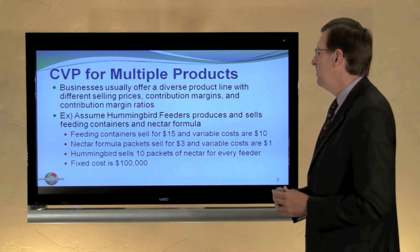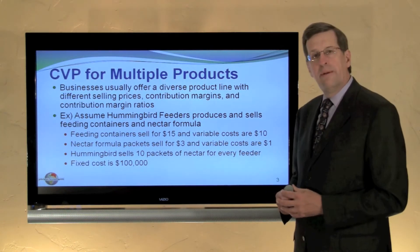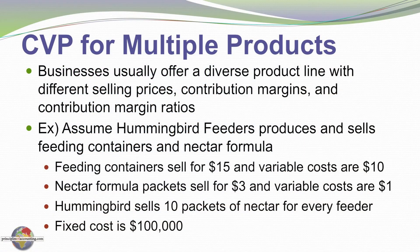We're going to use the example of Hummingbird Feeders. Hummingbird Feeders sells feeders and nectar packets. The feeders sell for $15 per unit and have a variable cost of production of $10, so they have a $5 contribution margin per unit. The nectar packets sell for $3 and have a $1 cost of production, so their contribution margin is $2 per unit.